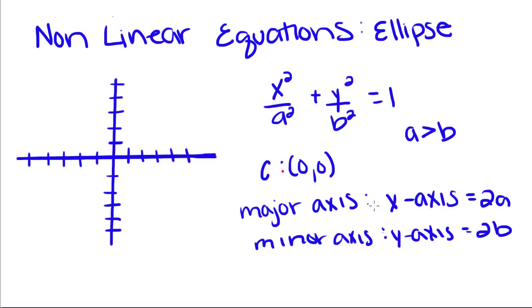Its major axis is going to lie along the x-axis because we know that a is greater than b. If b was greater than a, then these two would be switched. And its major axis has a length of 2a and its minor axis has a length of 2b.